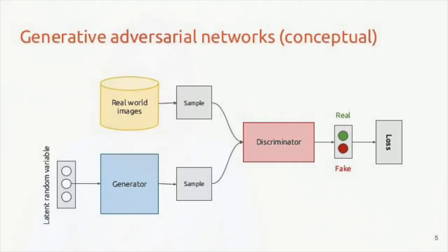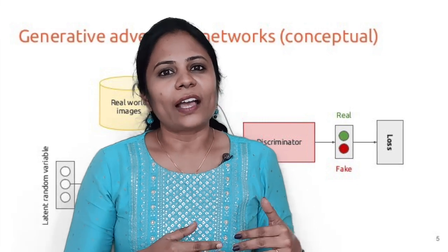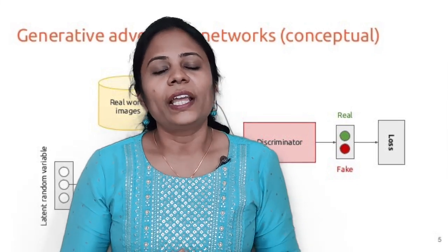Now let's see how this algorithm works. It works in a tricky way — the algorithm is split into two parts. The first part is called the generative part, and the second part is called the discriminator part.